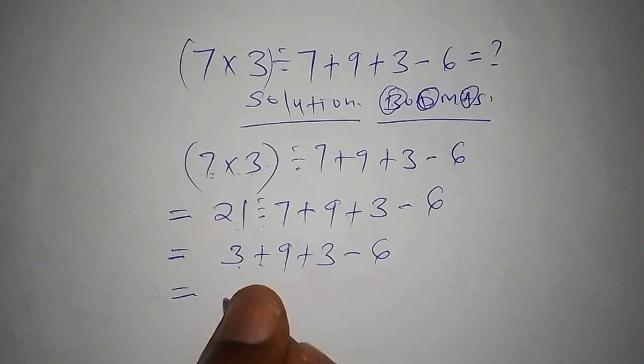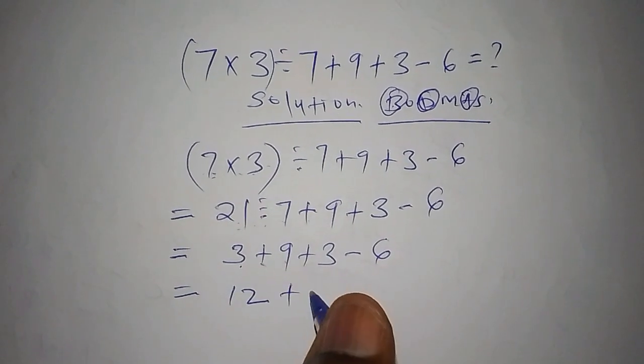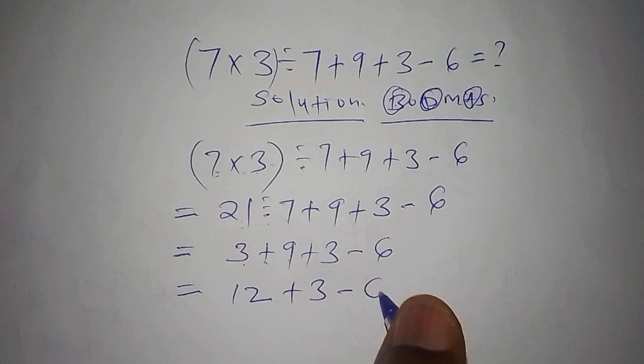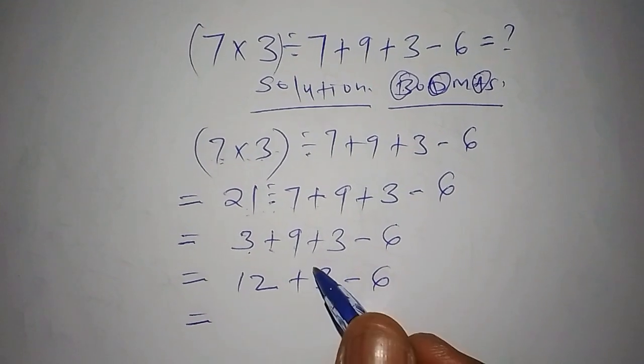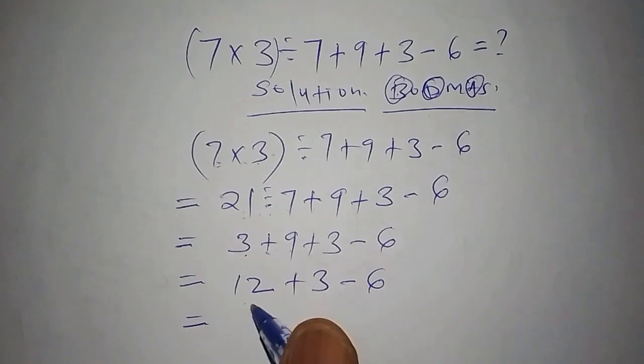From there we also have the addition still until it's over. 12 add to 3 is 15, subtract from 6.